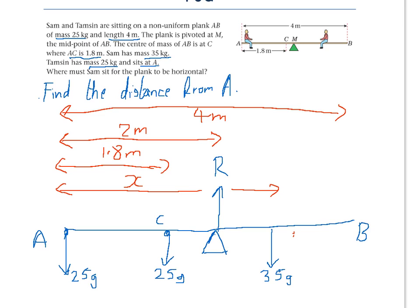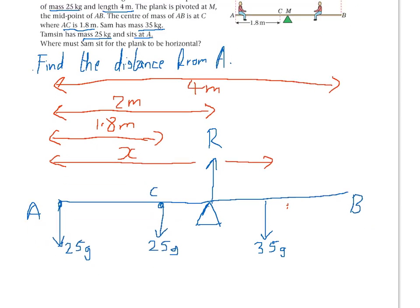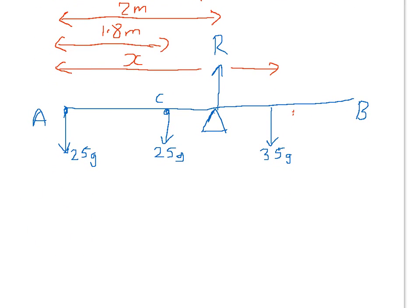Now, as we are looking for the case when the plank is horizontal, that means the forces acting upwards must be equal to the forces acting downwards. So R must be equal to all the forces acting downwards. So R is equal to 25g plus 25g plus 35g, which becomes 85g. Now there is no reason why we need to convert that into an actual value. We can leave our answer in terms of g.